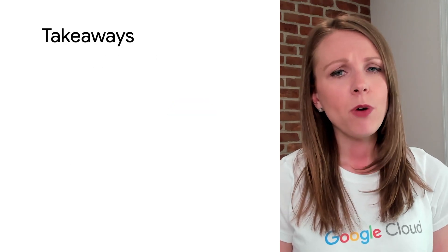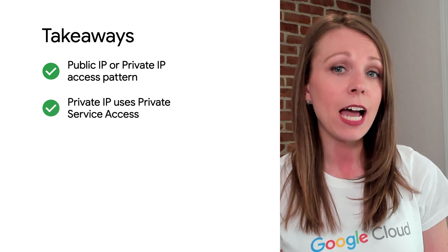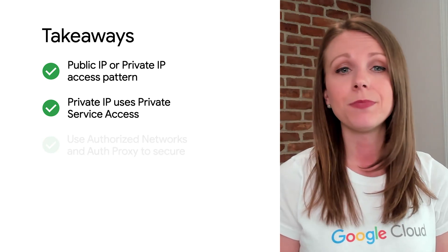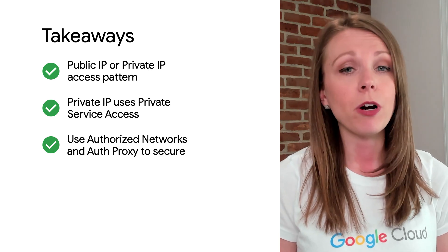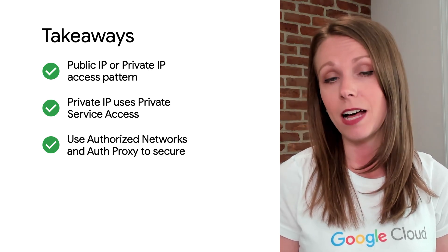Let's summarize the three most important takeaways from today. Cloud SQL can be deployed with either a public IP or private IP access pattern. If you want to use Cloud SQL private IP, you must create a private service access IP range and a VPC peer will be created — remember this when it comes to routing. You can use authorized networks or Cloud SQL auth proxy to determine who and what can access the Cloud SQL instance. Thanks for watching, and look out for another video on the concepts of networking for Google Cloud's managed services.